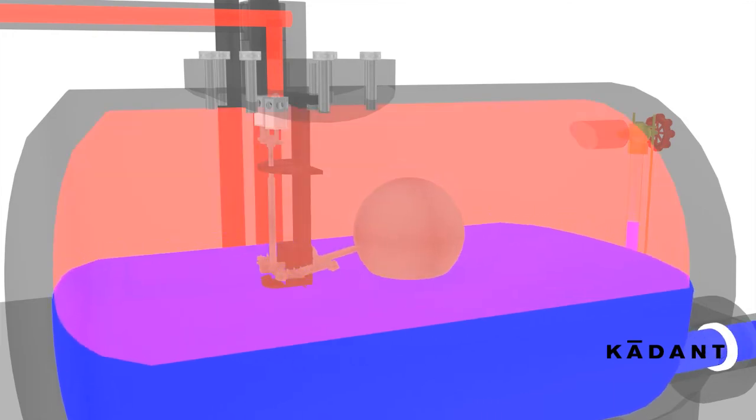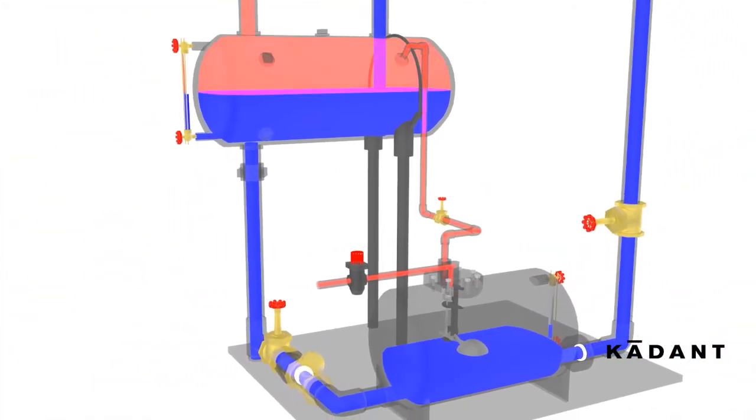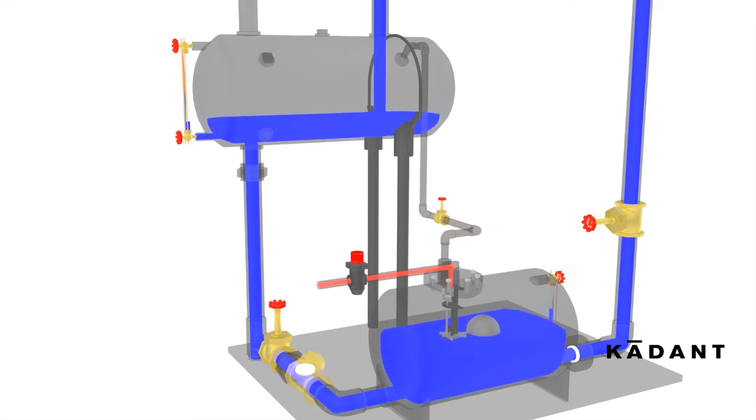the float mechanism snaps open the motive valve and closes the vent valve, allowing regulated motive pressure, steam, or compressed air to push the condensate out of the pump tank, through the outlet check valve, and into the overhead return line.